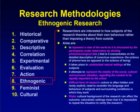In ethnogenic research methodology, researchers are interested in how subjects theorise about their own behaviour rather than imposing a theory from outside. Its aims are to represent a view of the world as structured by the participants under observation, by eliciting phenomenological data — that is, concentrating on the detailed description of conscious experience, the science of phenomena as opposed to the science of being. Taking place in undisturbed natural settings, it attempts to represent the totality of the social, cultural, and economic situation, regarding context as equally important as action. Culture is often hidden and rarely explicit, making this a difficult form of research.